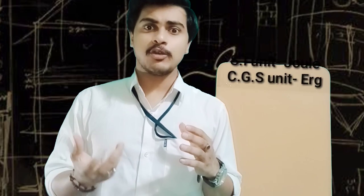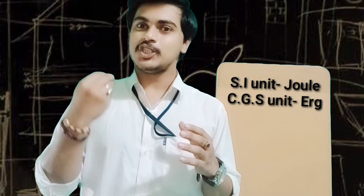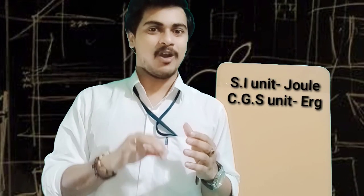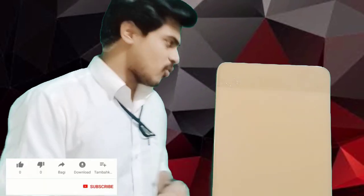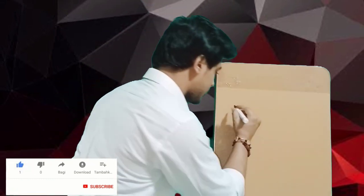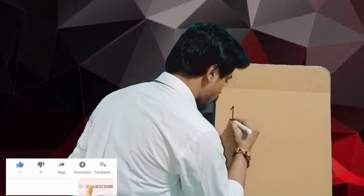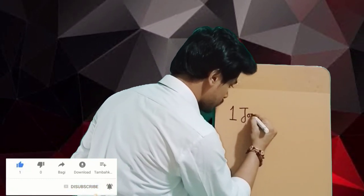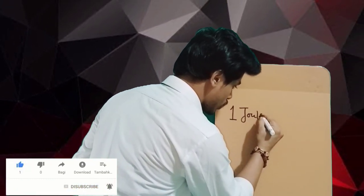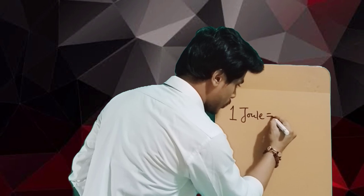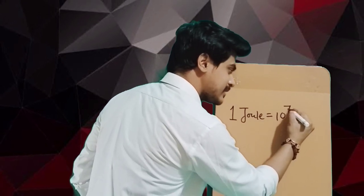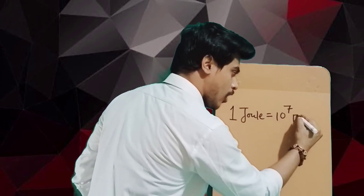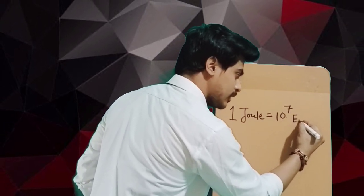The SI unit of energy is Joule, and the CGS unit is Erg. One Joule is equal to 10 to the power 7 Erg.